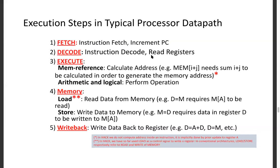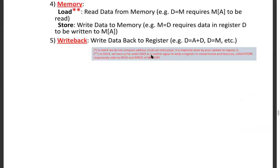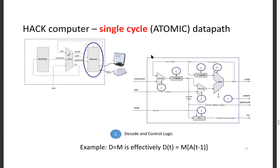Memory (MEM) handles any access to main memory — whether reading a value from it or storing a value to it. Write-Back (WB) writes data back to registers. In Hack assembly, if an instruction writes back to the D register, that feedback loop from the ALU to the D register is the write-back mechanism. For example, 'D = M' means memory at time t-1 becomes D at time t, reflecting the sequential circuit delay.